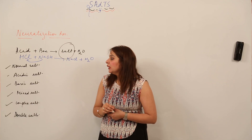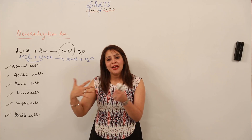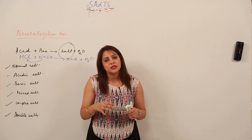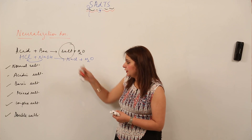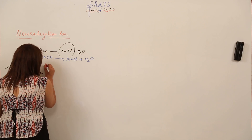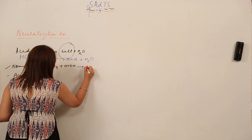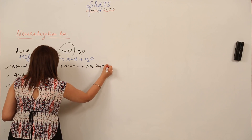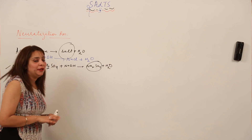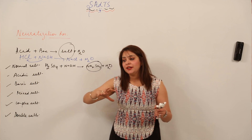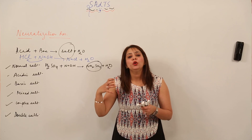In the normal salt, all the H ions from the acid and all the OH ions from the base are completely replaced. For example, H2SO4 plus NaOH gives Na2SO4 plus H2O. Since you cannot see any H or OH remaining in it, it is a normal salt — there is a complete replacement of H ions from the acid and OH ions from the base.